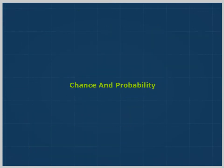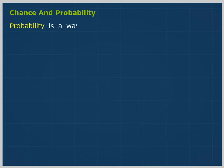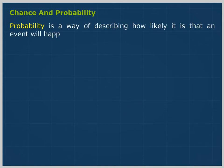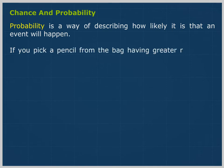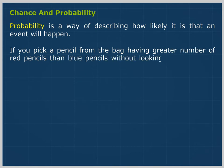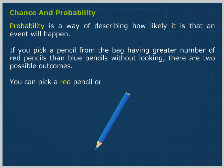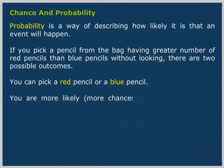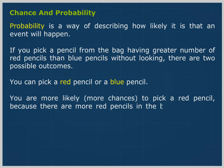Chance and probability. Probability is a way of describing how likely it is that an event will happen. If you pick a pencil from a bag having a greater number of red pencils than blue pencils without looking, there are two possible outcomes: you can pick a red pencil or a blue pencil. You are more likely to pick a red pencil because there are more red pencils in the bag compared to the blue pencils.